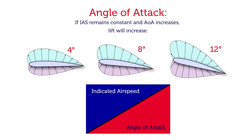If we start to reduce our indicated airspeed but still want to maintain level flight, as our speed decreases we need to increase the angle of attack to still produce the same amount of lift. The further we slow down, the greater the angle of attack has to be, as pictured at twelve degrees. At that large angle of attack we're flying quite slowly, so we need to produce a lot of lift to maintain level flight.